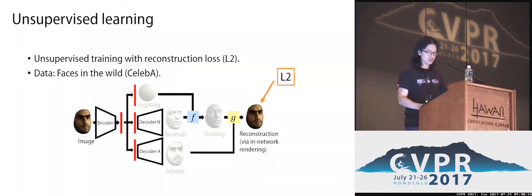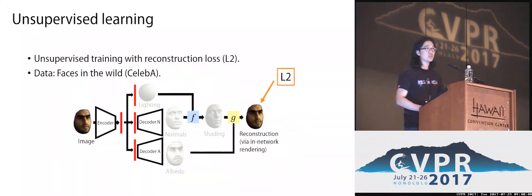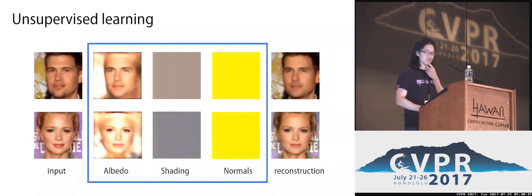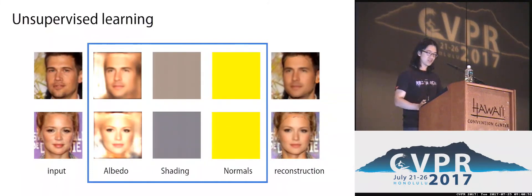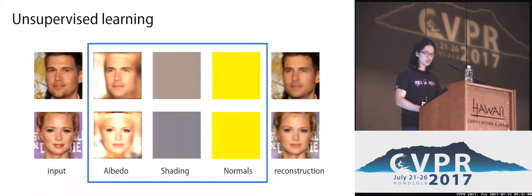As with a standard auto-encoder, we initially trained our network in an unsupervised manner using face datasets, with only supervision from the reconstruction. The results are interesting but not surprising: the network prefers a simple solution, generating flat normals and flat shading, with all illumination effects absorbed into the albedo image. Even though we got a reasonable reconstruction, we were unable to recover any of the physical factors. In our case, unsupervised learning is not enough.